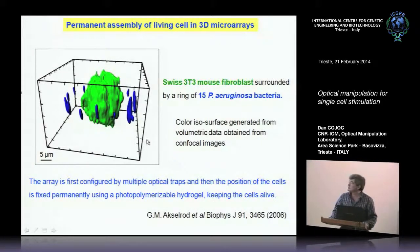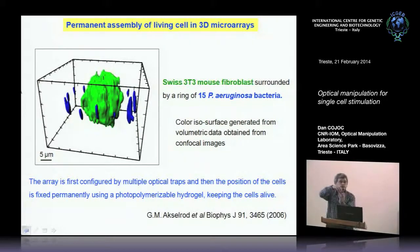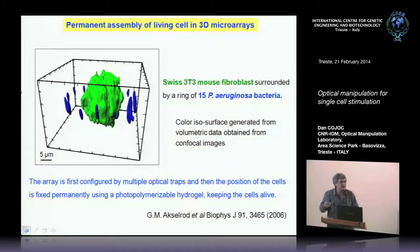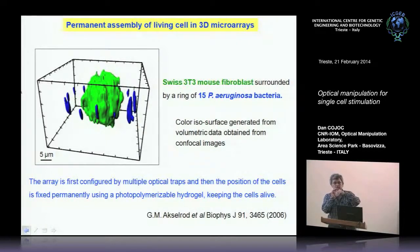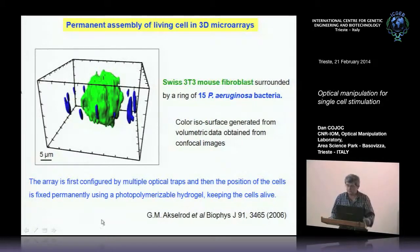An example I like from MIT is the permanent assembly of living cells in 3D microarrays. They surrounded a cell in green with 15 bacteria using multiple tweezers. The problem is the biologist wants to keep this configuration for two days to observe the effect of bacteria on the cell. To do this, they use photopolymerizable hydrogel, which when exposed to UV for very short exposure freezes the configuration while keeping the cells alive — then you put them in an incubator and follow the experiment.